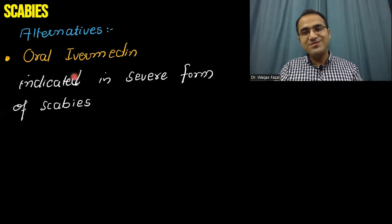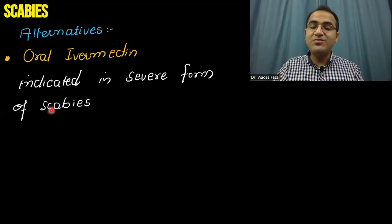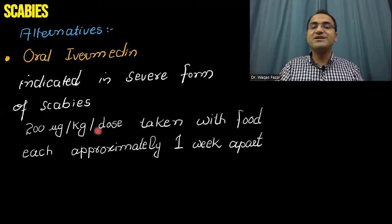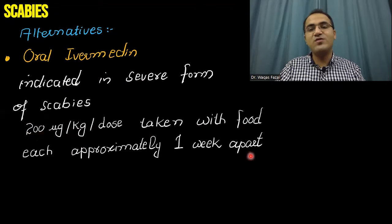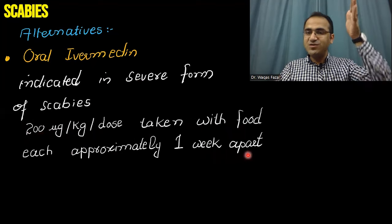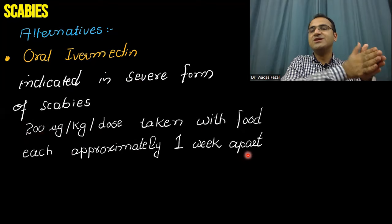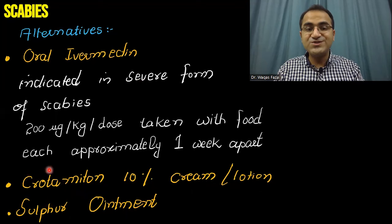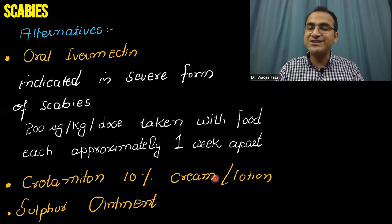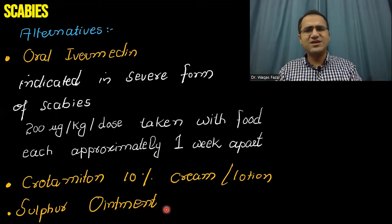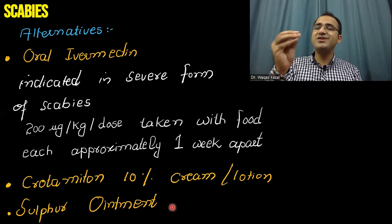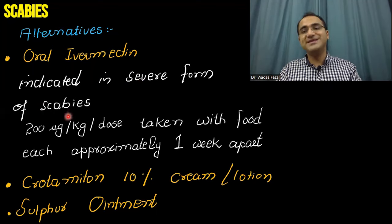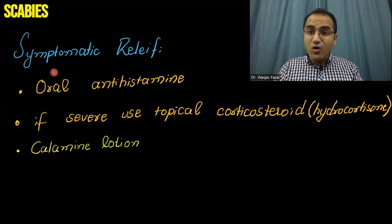Oral ivermectin is indicated only in severe cases of scabies and is given alongside permethrin lotion. The dose is 200 micrograms per kg per dose, taken with food, approximately one week apart — first dose at presentation and second dose one week later. Other options include crotamiton 10% cream or lotion and sulfur ointment, though sulfur ointment is less effective.